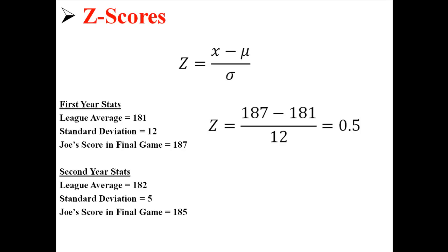So for the first year, I put in Joe's score of 187, which is x, the population mean, which is 181, and the standard deviation, which is 12. And I calculate a z-score of 0.5. So that means we're 0.5, or about half of a standard deviation above the mean.